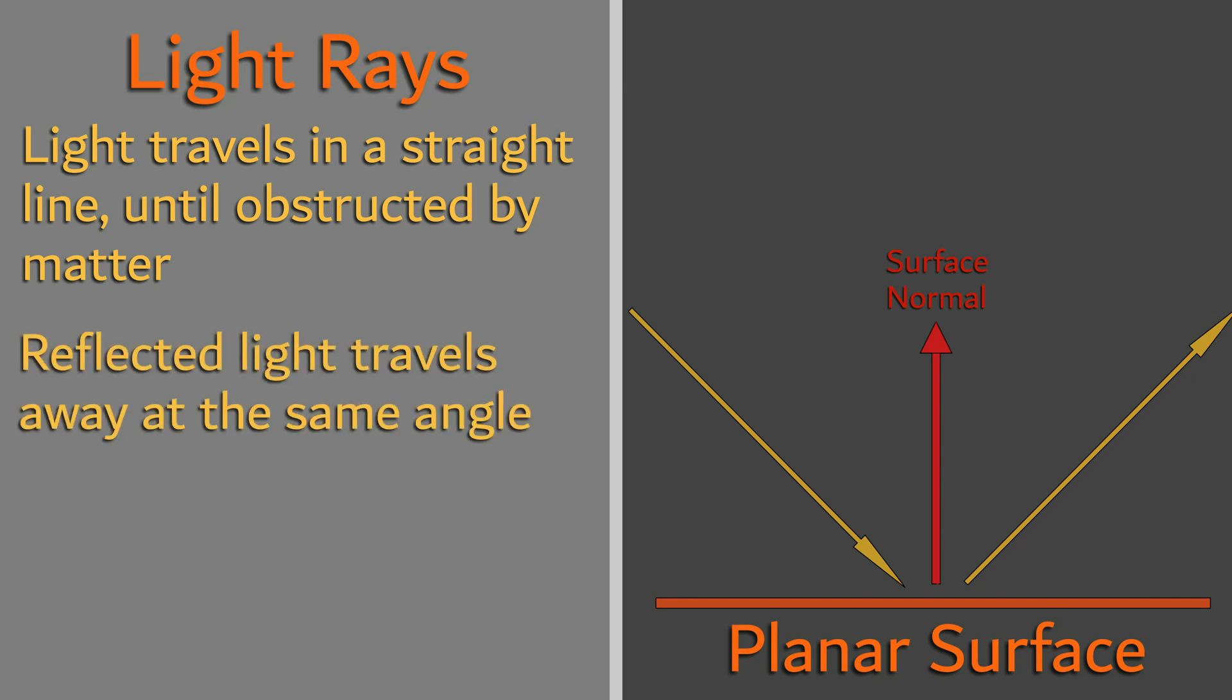These are called the incident ray and the reflected ray. We measure these interactions with the angle of incidence and angle of reflection, which are the same value when measured from ray to surface normal.